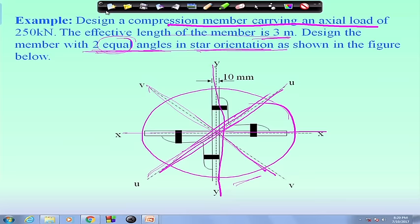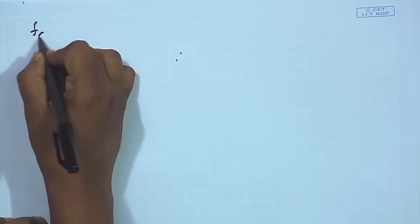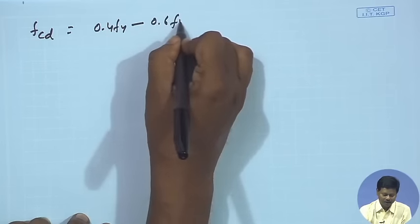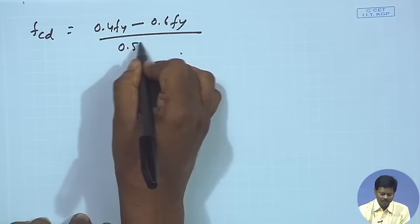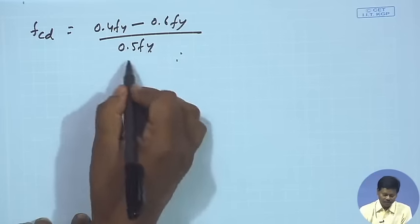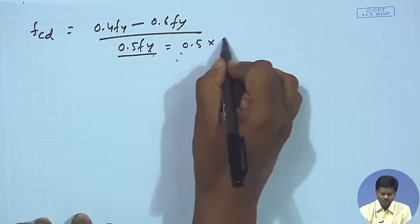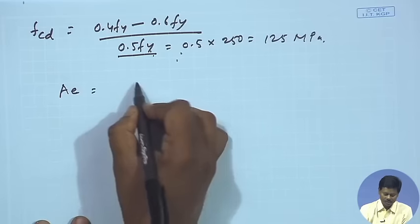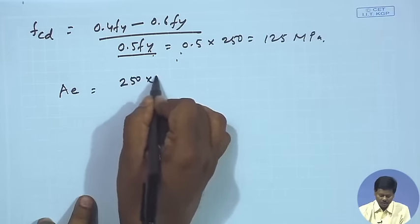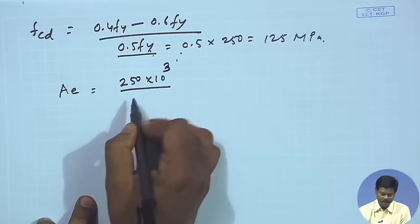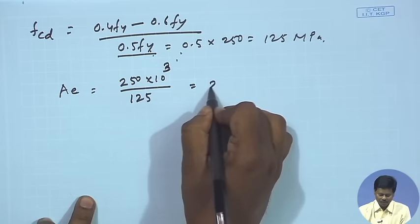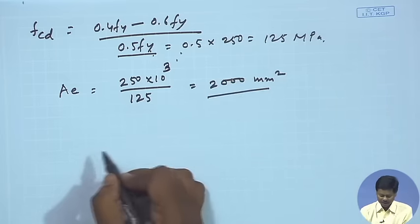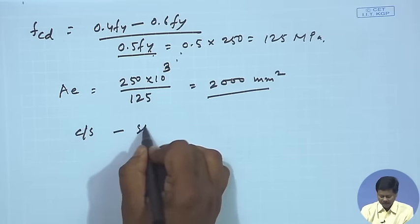Let us go through the design process. First, assume a suitable Fcd value — 0.4 fy to 0.6 fy. Let us consider 0.5 fy, that means 0.5 × 250 = 125 MPa. So the required area Ae can be found as Pd / Fcd = 250 kilo Newton / 125 = 2000 mm².